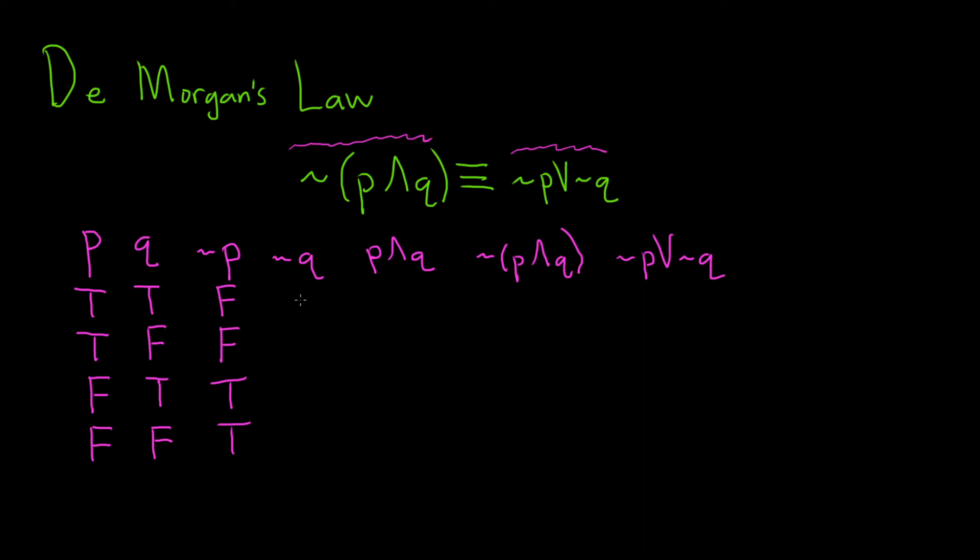Not q, again, we'll just switch the truth value for q. So true becomes false, false becomes true, true becomes false, false becomes true.